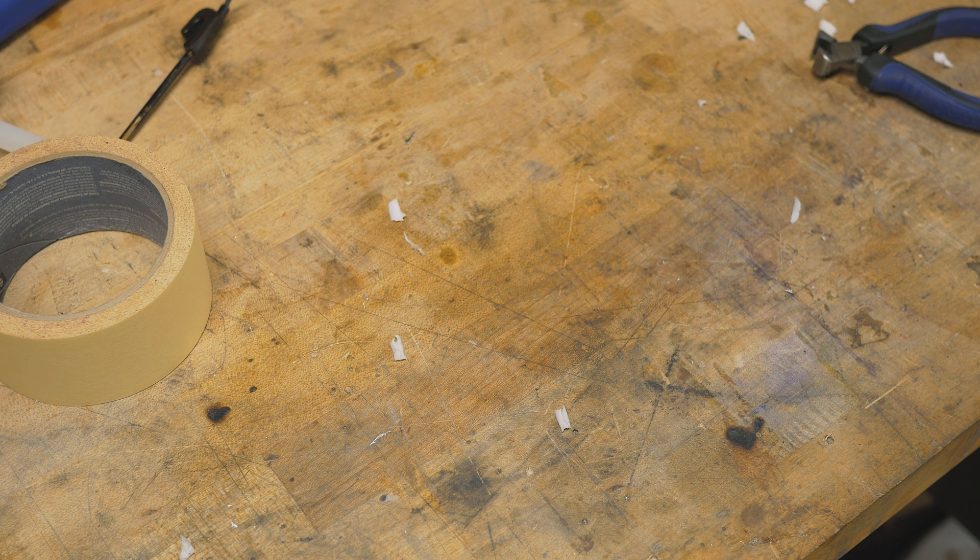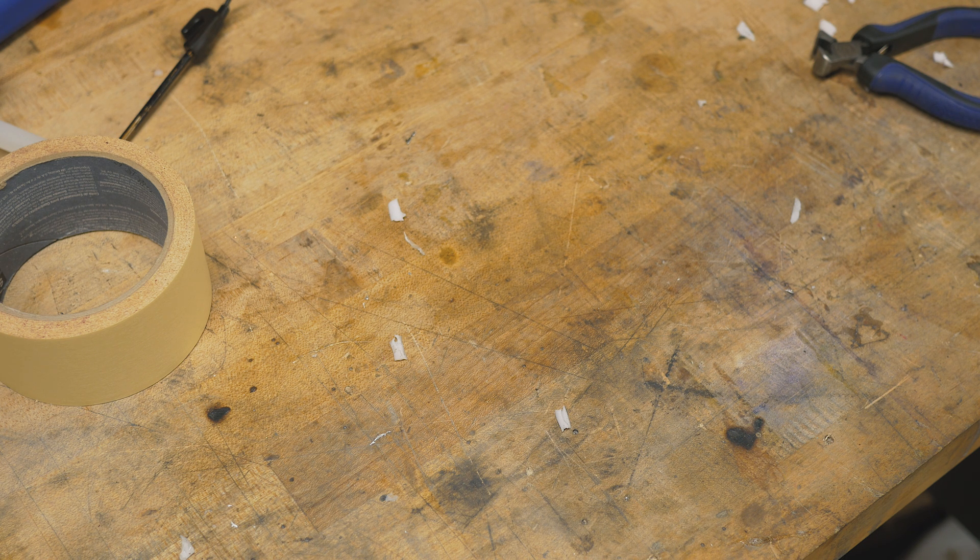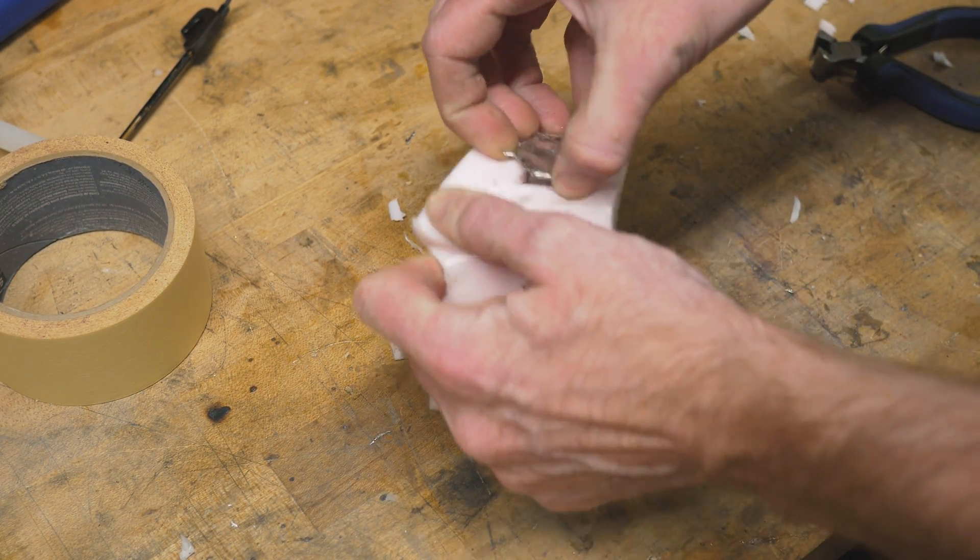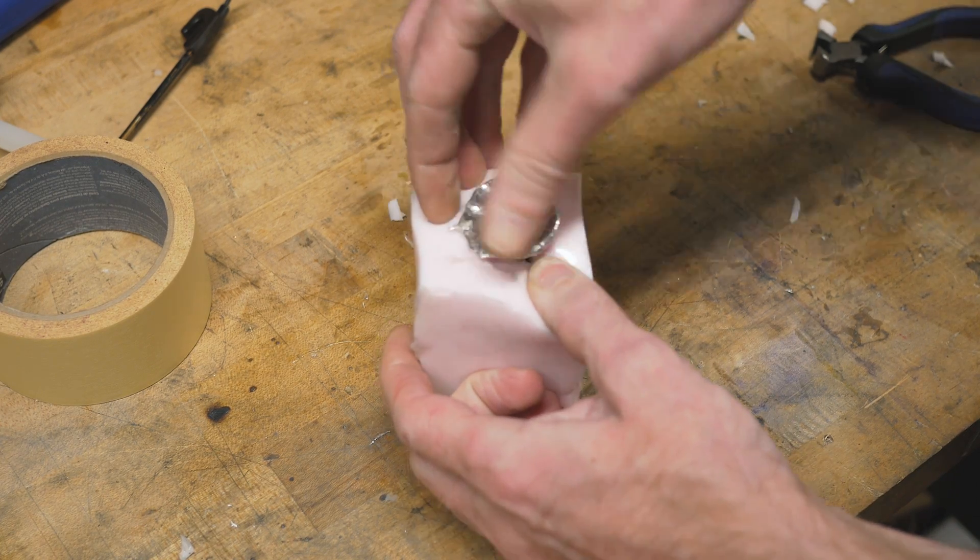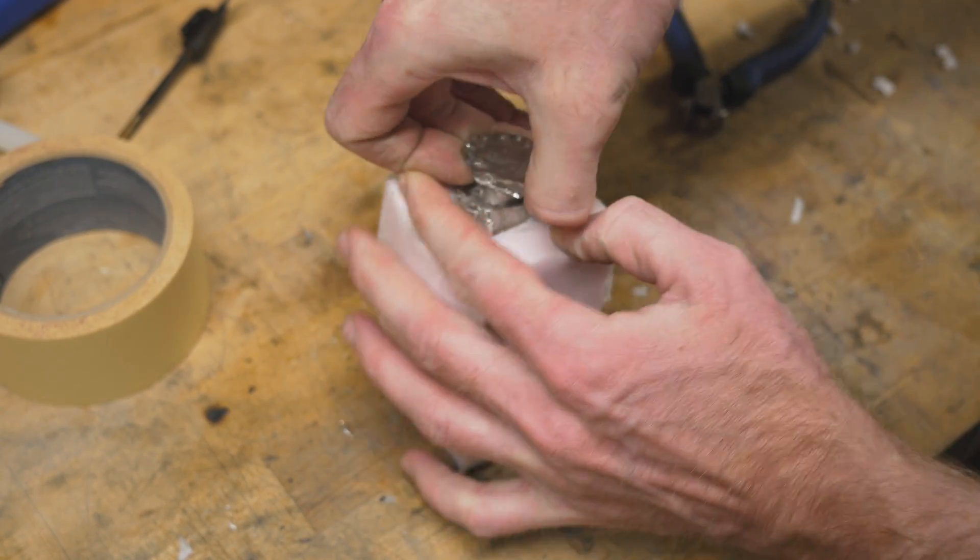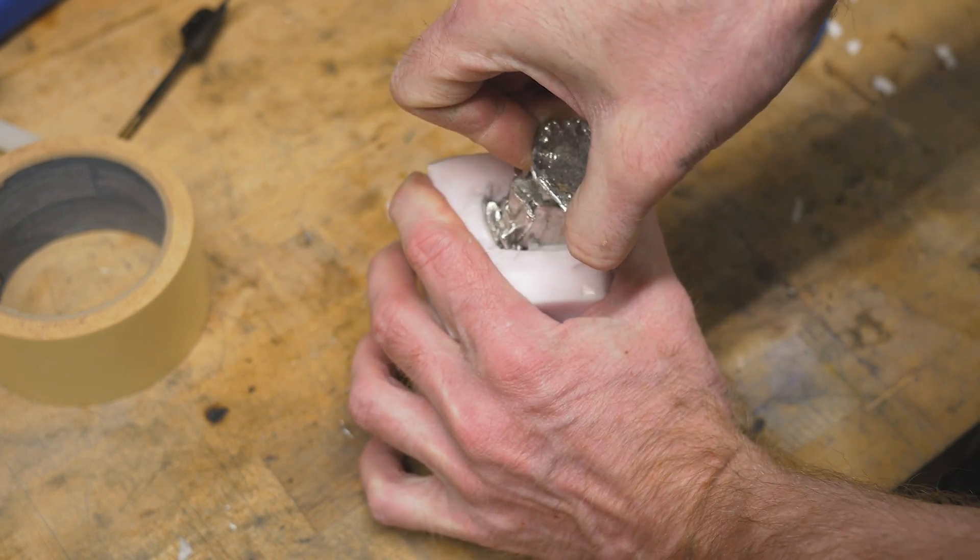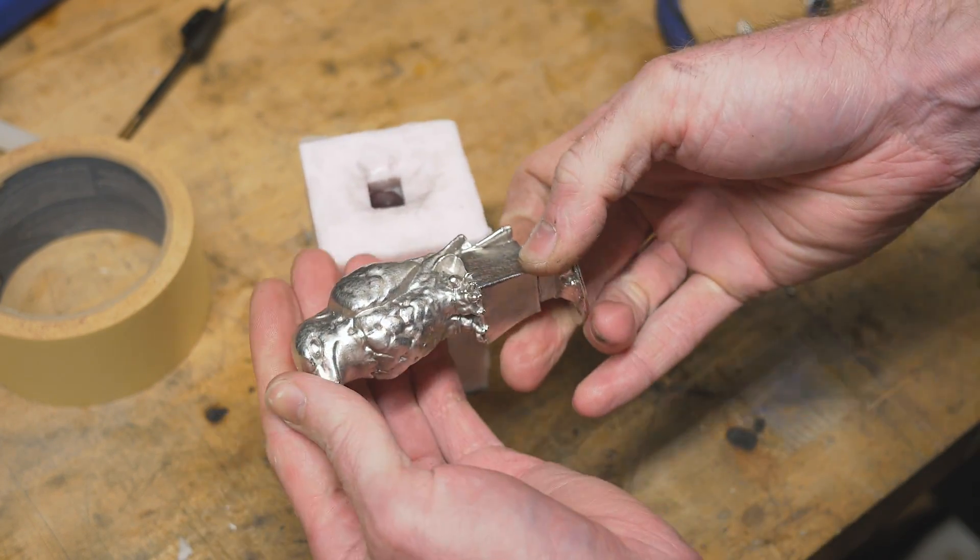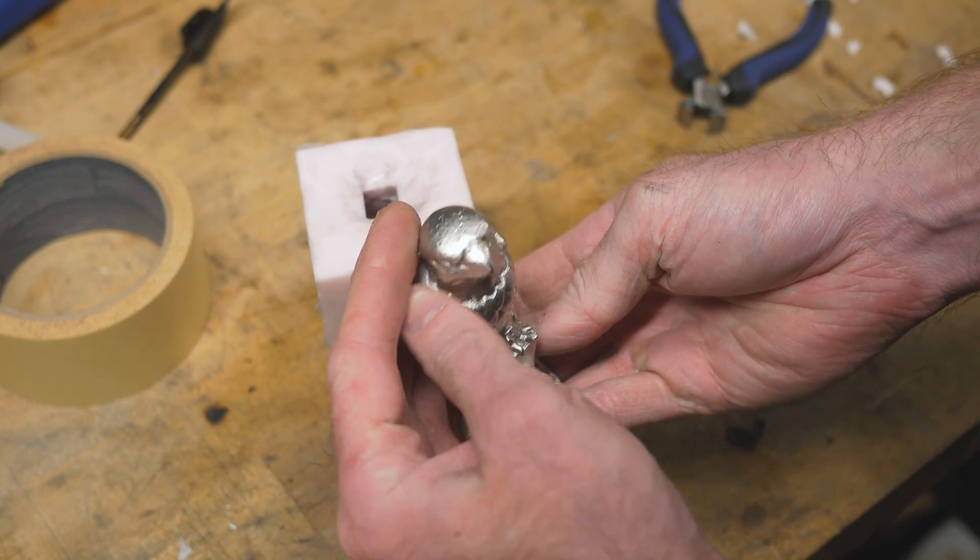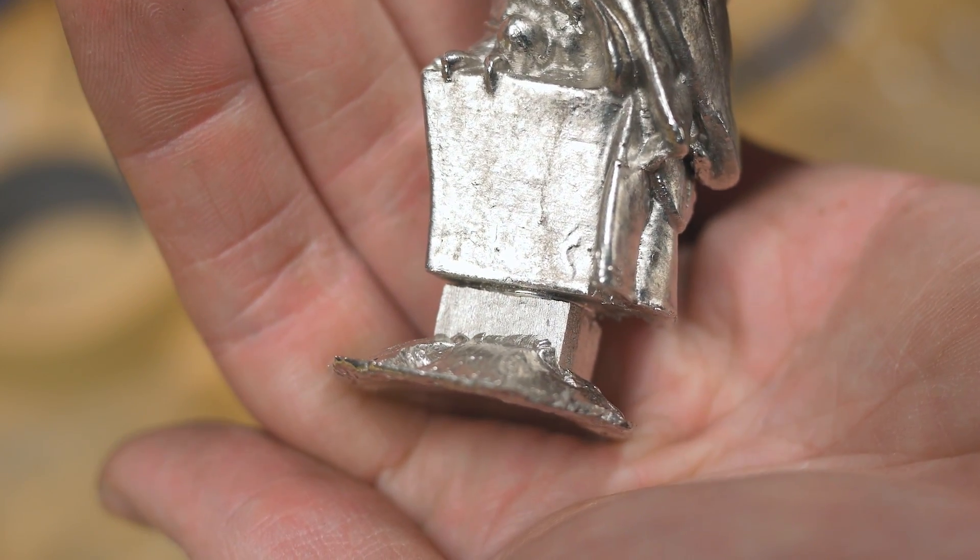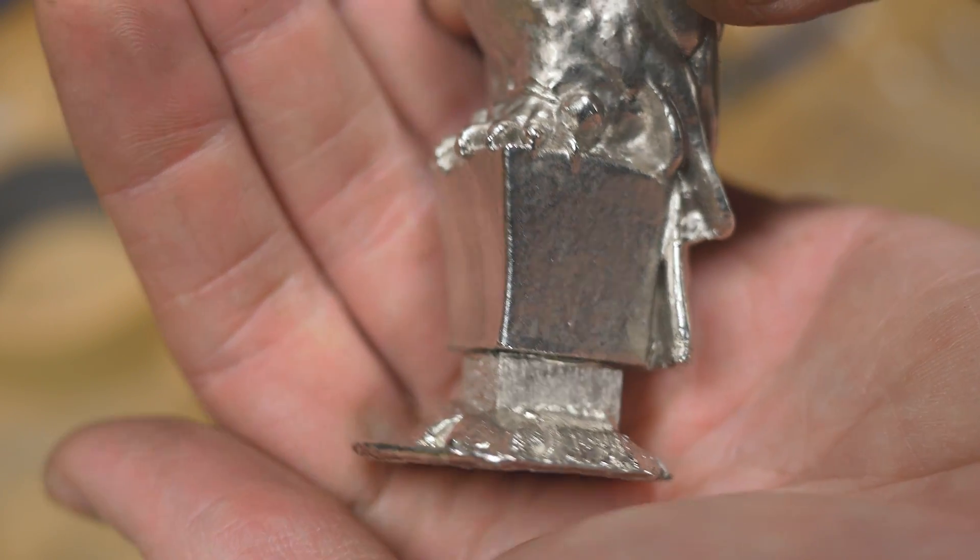I quickly did a second cast with the mold still warm from the first pour to see how that does. And it turned out beautifully. You can even clearly see the cast of the hot glue used to stick that riser to the base.